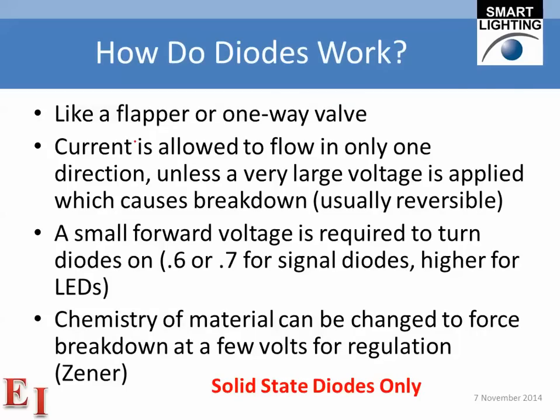How do diodes work? They basically work like a flapper or a one-way valve — they allow flow of current in one direction and inhibit flow of current in the other direction. The amount of current that can flow in the backwards direction is very small, typically in the nanoamp range or less, depending on temperature and diode size. In the forward direction, they can carry quite a large amount of current.